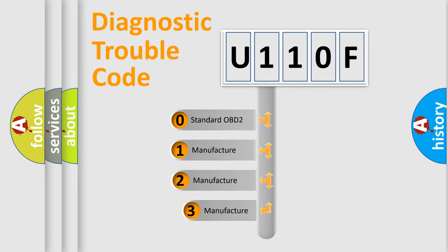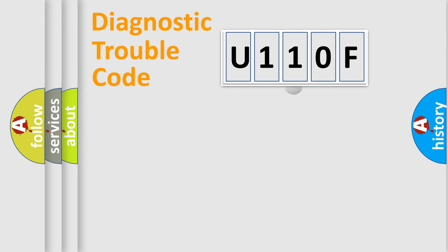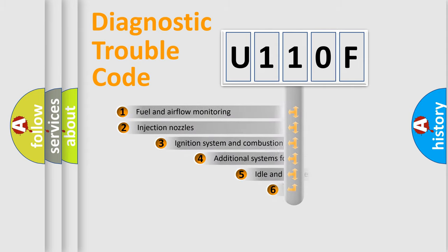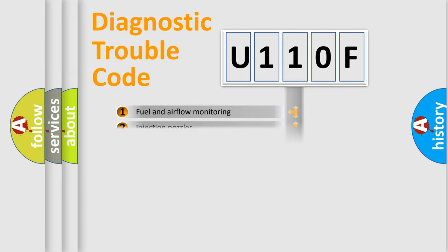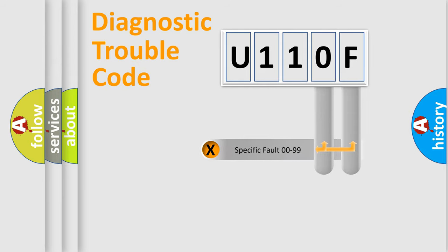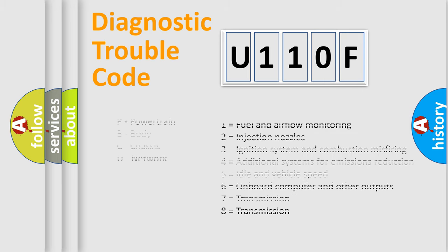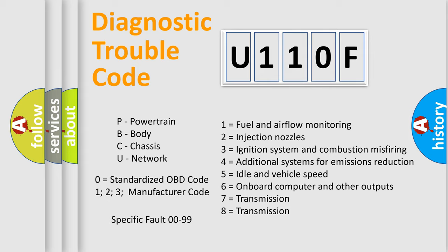If the second character is expressed as zero, it is a standardized error. In the case of numbers 1, 2, 3, it is a manufacturer-specific expression of the error. The third character specifies a subset of errors. The distribution shown is valid only for the standardized DTC code. Only the last two characters define the specific fault of the group. Let's not forget that such a division is valid only if the second character code is expressed by the number zero.